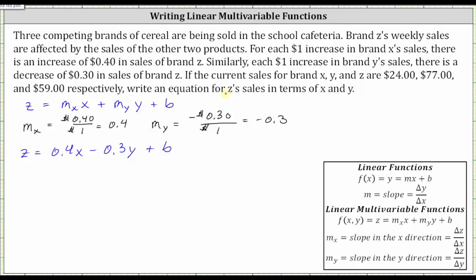We can do this because we know the current sales of X, Y, and Z are $24, $77, and $59 respectively. To find b, we substitute 24 for x, 77 for y, and 59 for Z. Performing the substitution gives us 59 equals 0.4 times 24 minus 0.3 times 77 plus b.